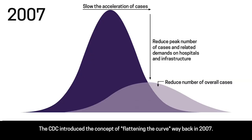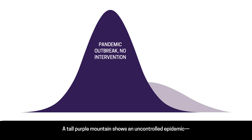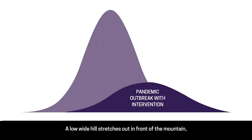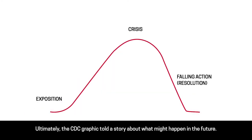The CDC introduced the concept of flattening the curve way back in 2007. The tall purple mountain shows an uncontrolled epidemic — no social distancing and no masks. A low wide hill stretches out in front of the mountain, showing the potential benefits of intervention. Ultimately, the CDC graphic told a story about what might happen in the future.